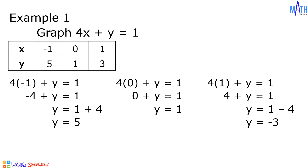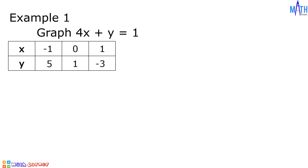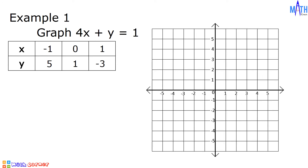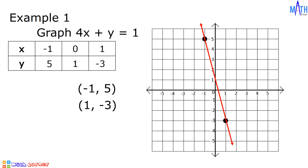Using any two points, let us graph 4x + y = 1. Let us consider (-1, 5): from the origin, move 1 unit to the left and 5 units upward. Let us also use (1, -3): from the origin, move 1 unit to the right and 3 units downward. After plotting the two points, let us draw a line passing through these two points. This is the graph of 4x + y = 1.